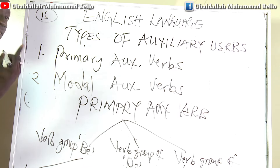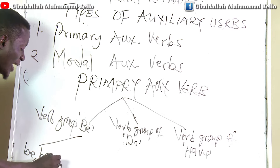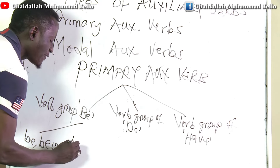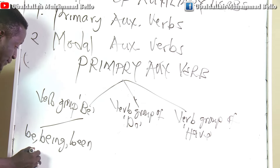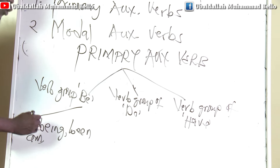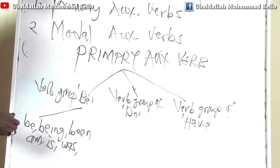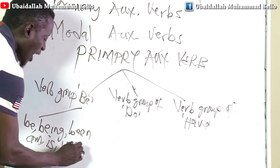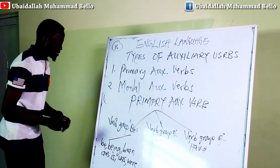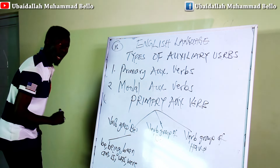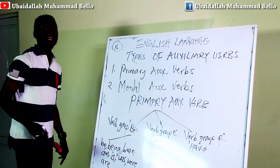Under the verb group of BE, we have: BE itself, BEEN, BEING, AM, IS, WAS, WERE — let's count and see — and the last one is ARE. That gives us all eight items.